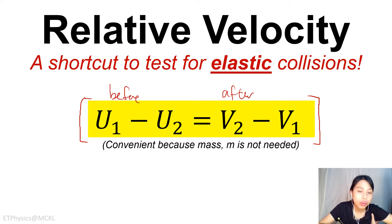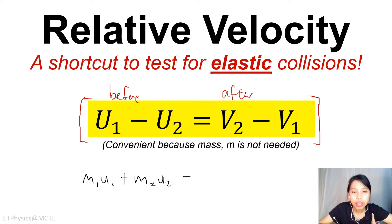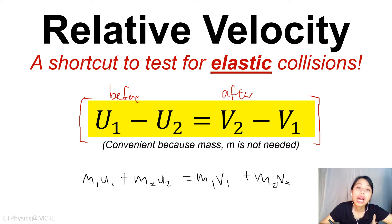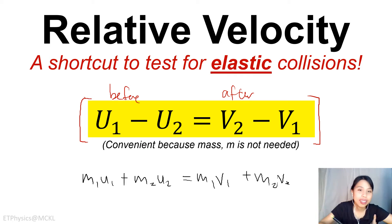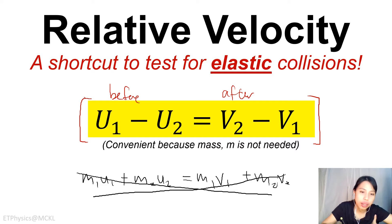You don't need to use your momentum conservation equation M1U1 + M2U2 = M1V1 + M2V2. That's very long. Notice how we don't need mass at all to calculate velocities — so it's like a shortcut.